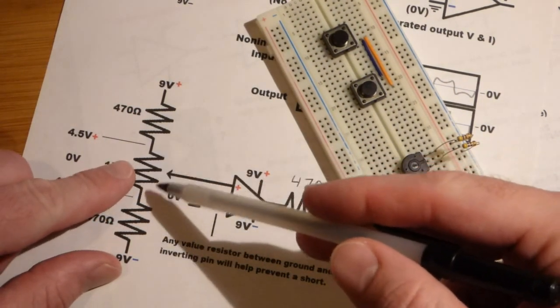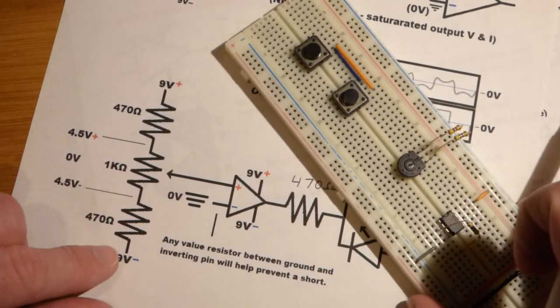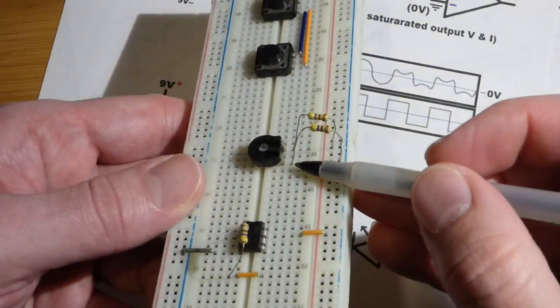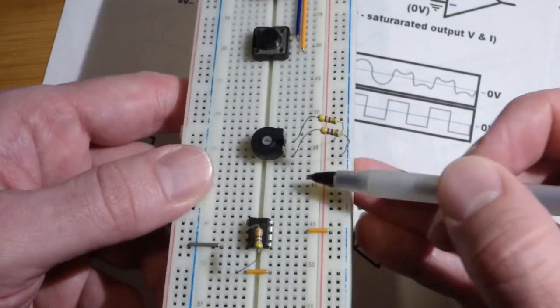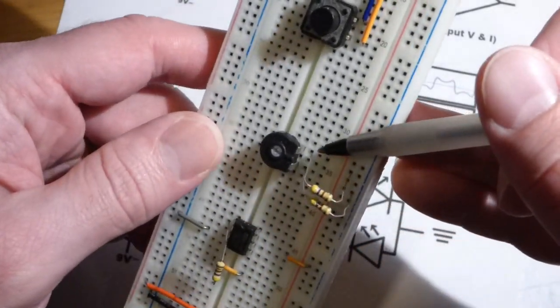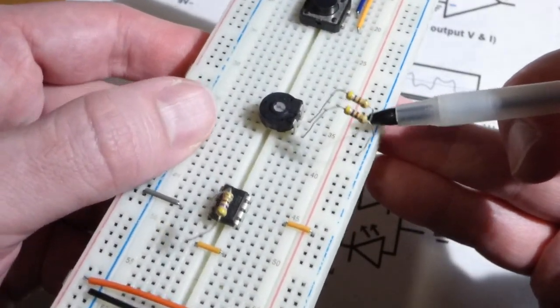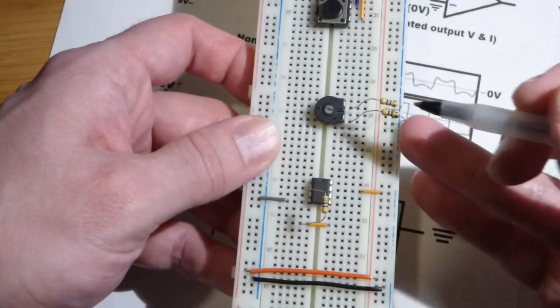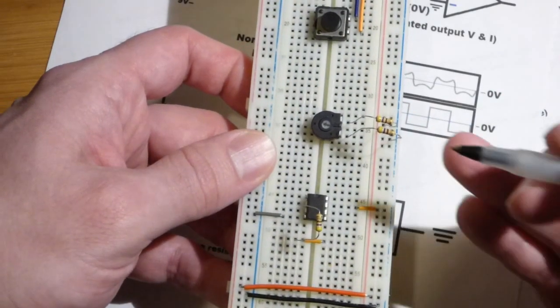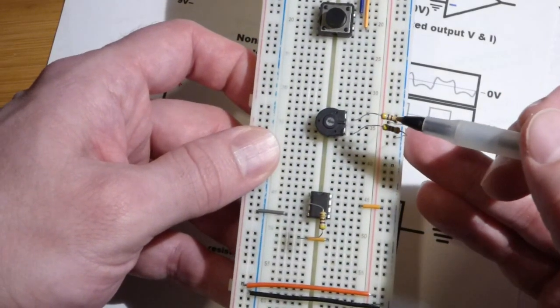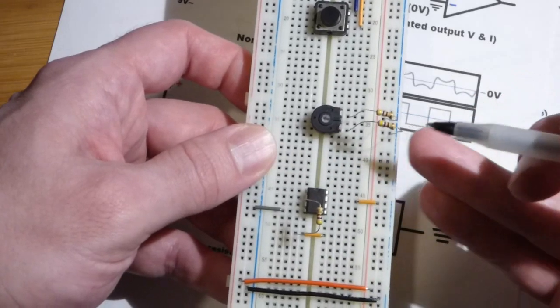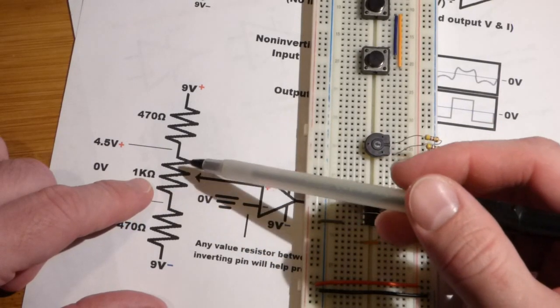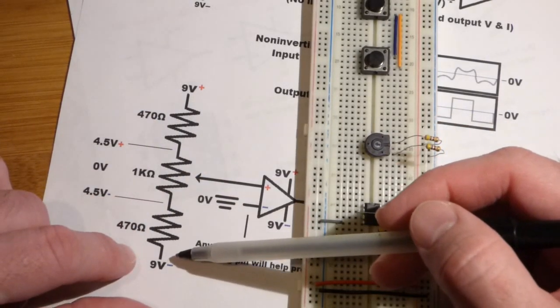I already have a 1 kilo ohm trim pot and then there's two 470 ohm resistors. That's the only fixed value resistor I'm going to use. On one side of the trim pot, that goes to negative, the lower side there. The upper side here, I have a 470 ohm resistor that goes to the positive rail. Remember, there will be almost 18 volts, 18 volts if you're using two batteries that are 9 volts or above. You're going to have about 18 volts across these three components. To have enough resistance, I used a 1 kilo ohm trim pot and 470 ohm resistors on each side.